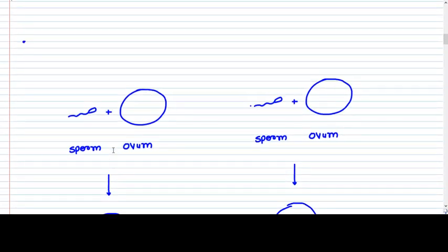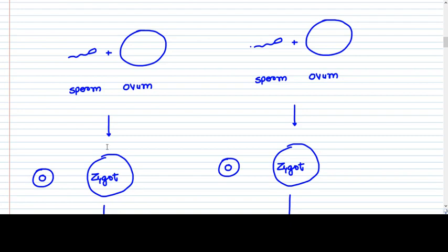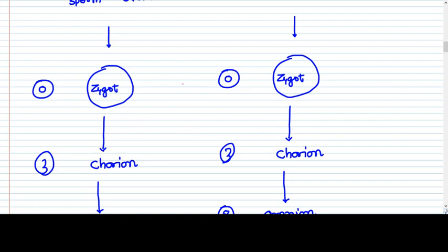Now, what is dizygosity and what is monozygosity? Dizygosity means when two separate ova and two separate sperms get fertilized. Two separate sperms and two separate ova get fertilized and make two separate zygotes. The sex is determined at the very moment when each zygote is formed. So two different zygotes are formed.